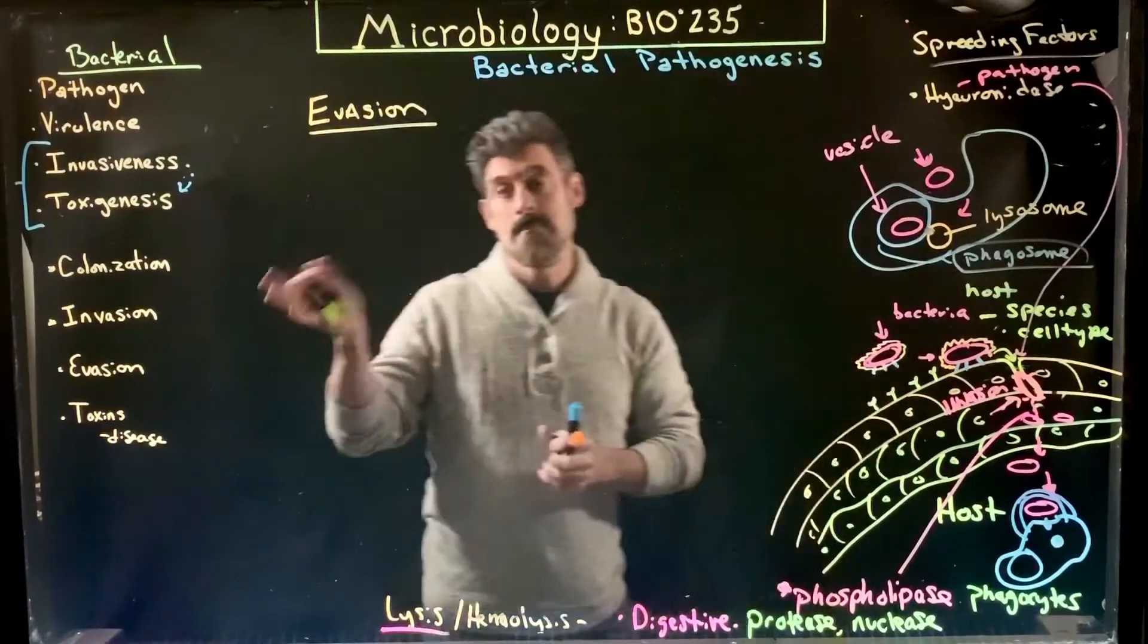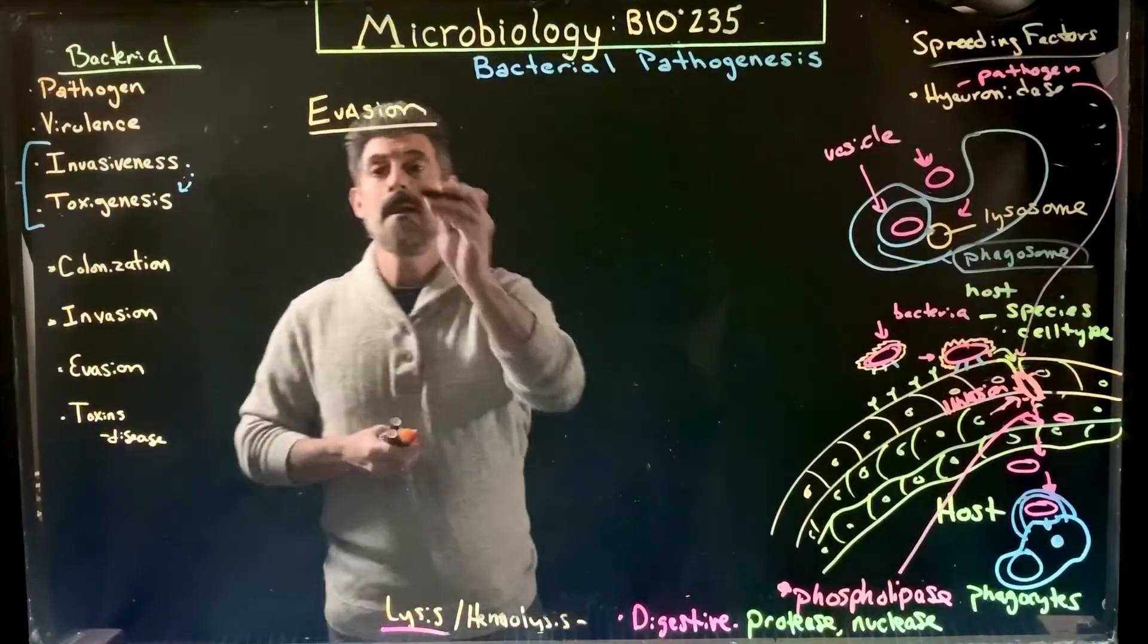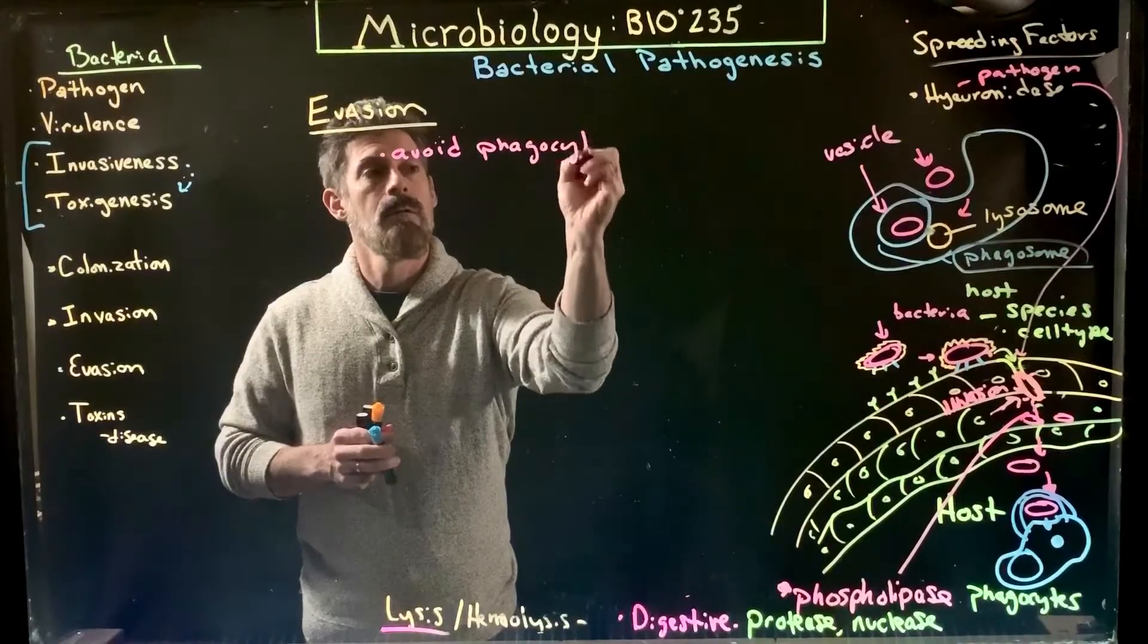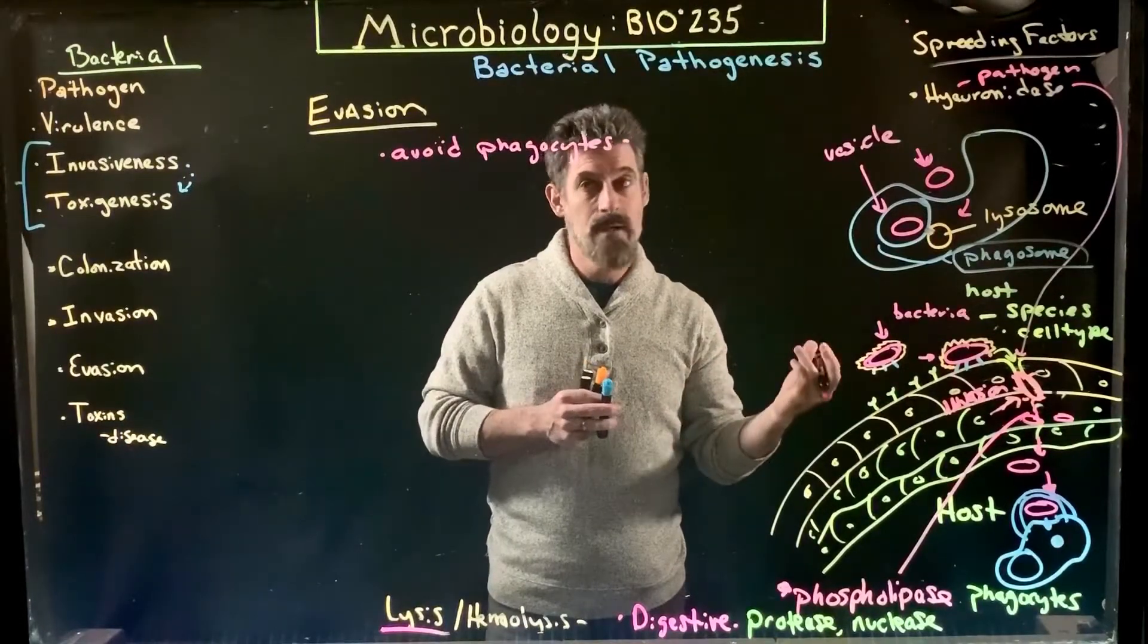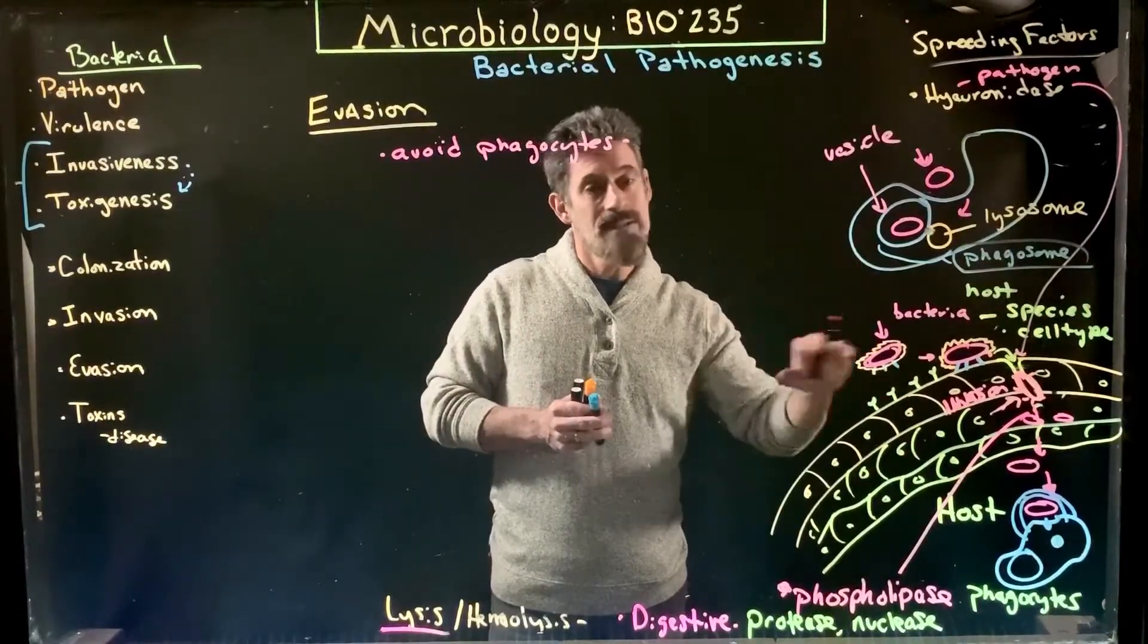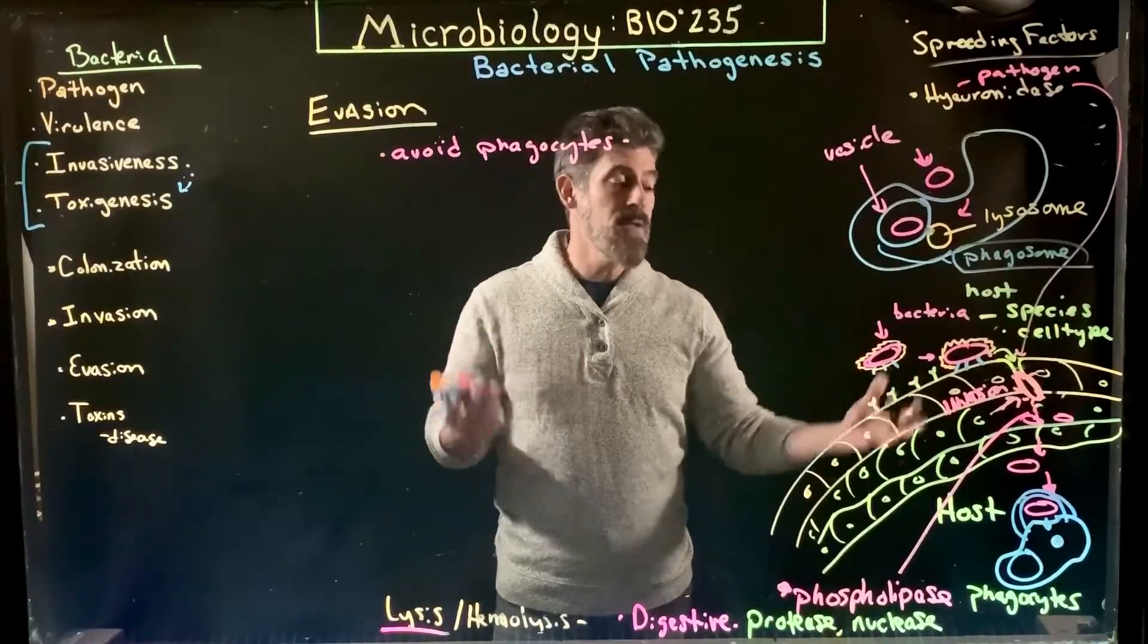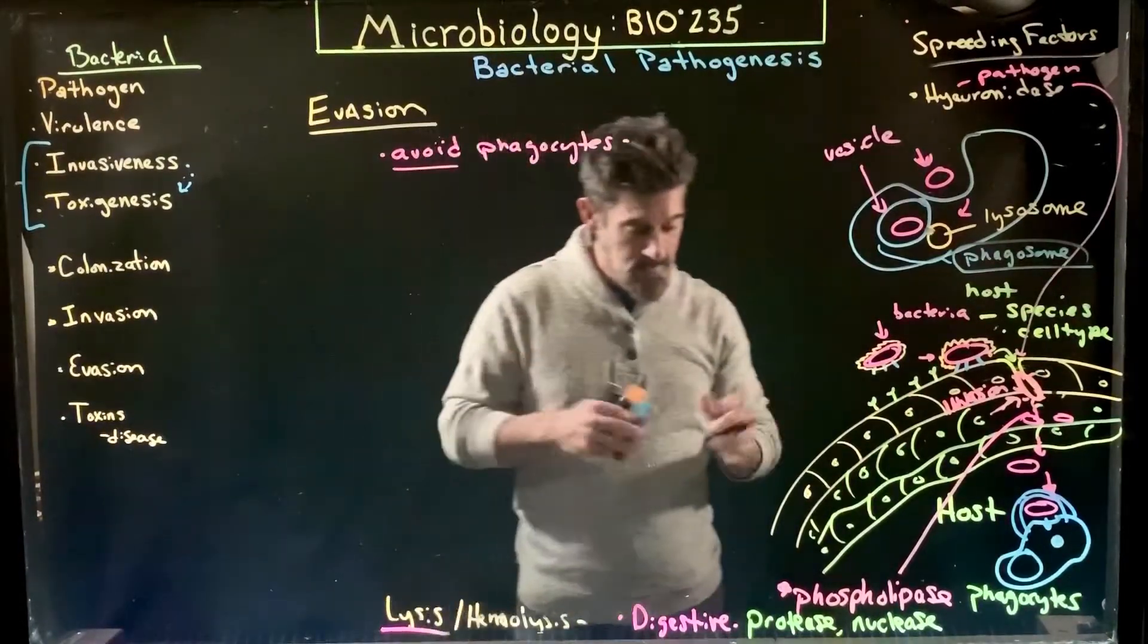Unless the bacteria can prevent that from happening through evasion. So some bacteria can simply avoid the phagocytes. They can essentially hide out from them, remain in some tissues that the phagocytes don't enter, and just stay away from them in general. They can do their thing, invade the tissue, but stay away from areas where the phagocytes are. That's not going to be that effective for really penetrating into the host or spreading very far. But that is one strategy—just avoid them outright.